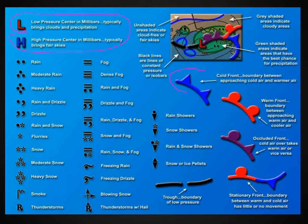Know the different fronts, or boundaries between air masses: cold, warm, occluded, and stationary. A cold front is cold air approaching warm air. A warm front is warm air approaching cold air. An occluded front is cold air lifting the warm air off the ground. And a stationary front is a boundary where there's no movement in the air.